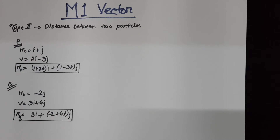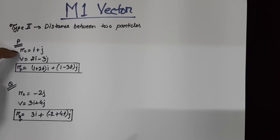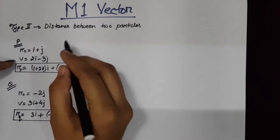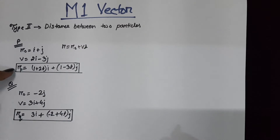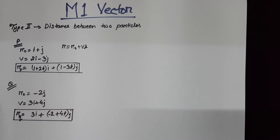To find the distance between the particles after a certain time duration, we need to find the relative position between them. Suppose particle P has initial position r₀ = i + j and a velocity. Using the formula r = r₀ + vt, you can find the final position of particle P after t seconds.